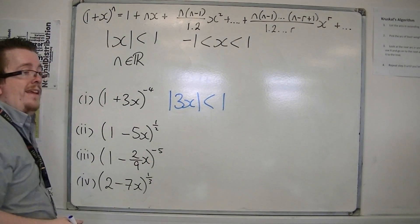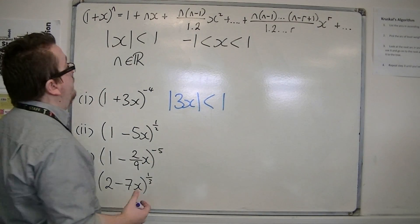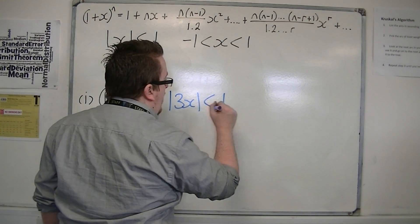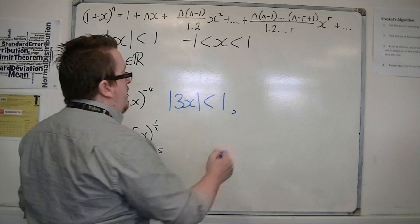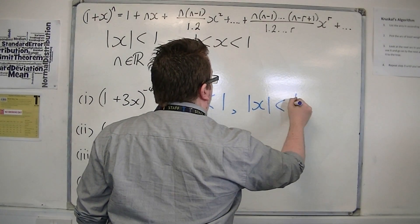The mod of 3x is less than 1. Then we can divide through by 3, and I get mod x is less than 1 third.